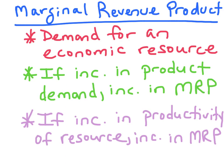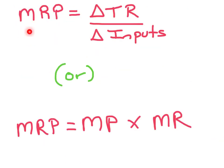So remember, when we say marginal revenue product, or MRP, we are just referring to the demand for an economic input, resource, or factor. The marginal revenue product is equal to the change in total revenue divided by the change in number of inputs. We can also find the MRP by taking the marginal product, or marginal physical product, and multiplying that by the marginal revenue. So if we're working with a perfectly competitive product market, it would be equal to the marginal product times the price.